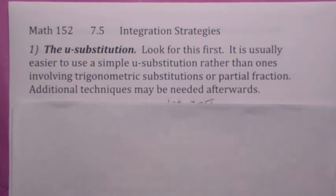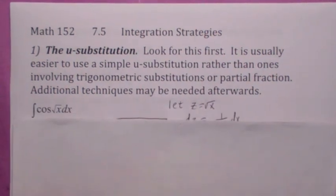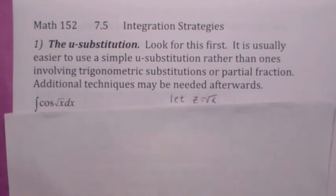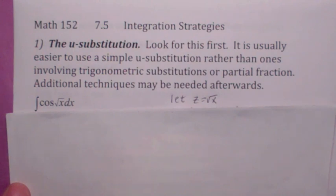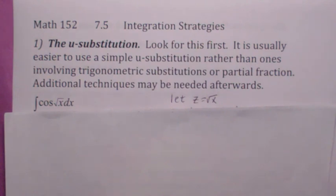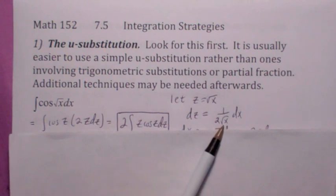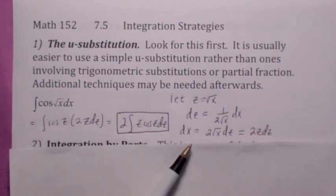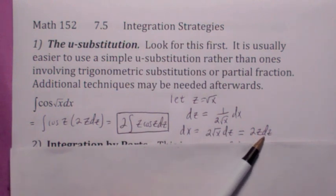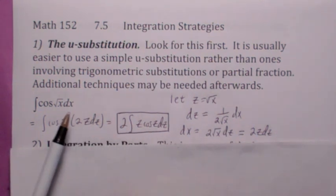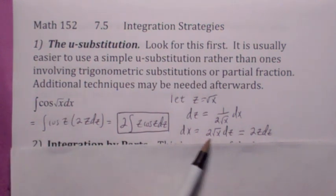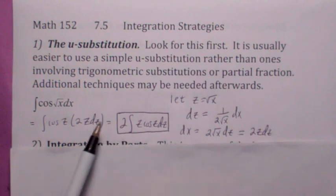Other times, what will happen is you'll make a u-substitution, and then the integral turns into something that you can deal with. Like in this particular case, we've got the integral of cosine square root of x dx. If you make a u-substitution, I'm actually going to use z, and I use z because I like to save u for my integration by parts. Isn't that silly? But anyway, if you let z be square root of x, then dz becomes 1 over 2 square root of x dx, and then dx becomes 2 square root of x dz, or 2z dz. So we're substituting not only for square root of x as being z, but we're also substituting for dx. So dx becomes 2z dz.